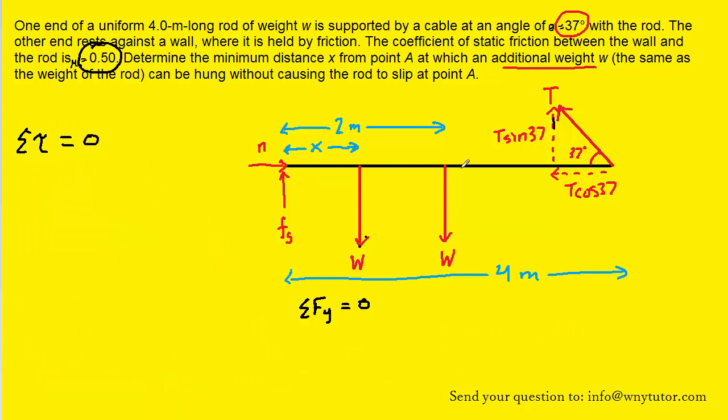When applying this equation, we're going to want to choose a pivot point somewhere along the rod, and it's always advantageous to choose your pivot point through where the greatest number of unknown forces lie. Let me say that again because that was probably a little confusing. You want to choose your pivot point, it's going to turn out to be right here.